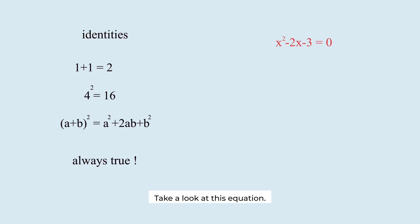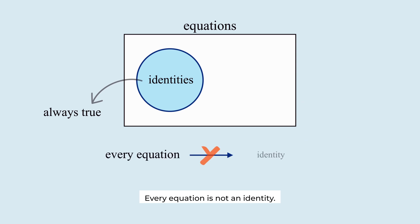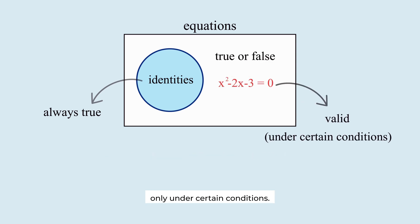Take a look at this equation. It only holds true when x is minus 1 or 3. Otherwise, it doesn't work. Every equation is not an identity. Some equations are valid only under certain conditions. Those are what we call equations in a specific sense.